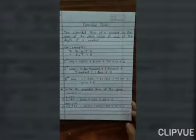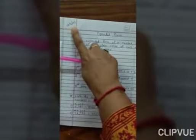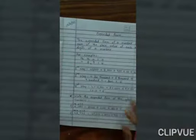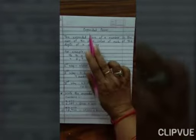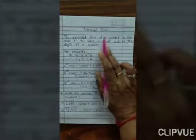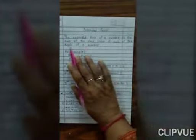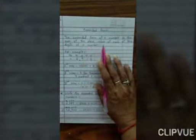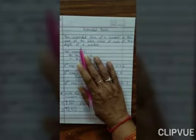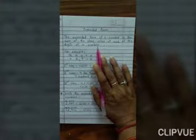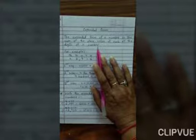Hello everyone, write down today's date: 13-4-2021. Today we are going to learn the expanded form. So what is expanded form? Expanded form means the expanded form of a number is the sum of the place value of each of the digits of the number.